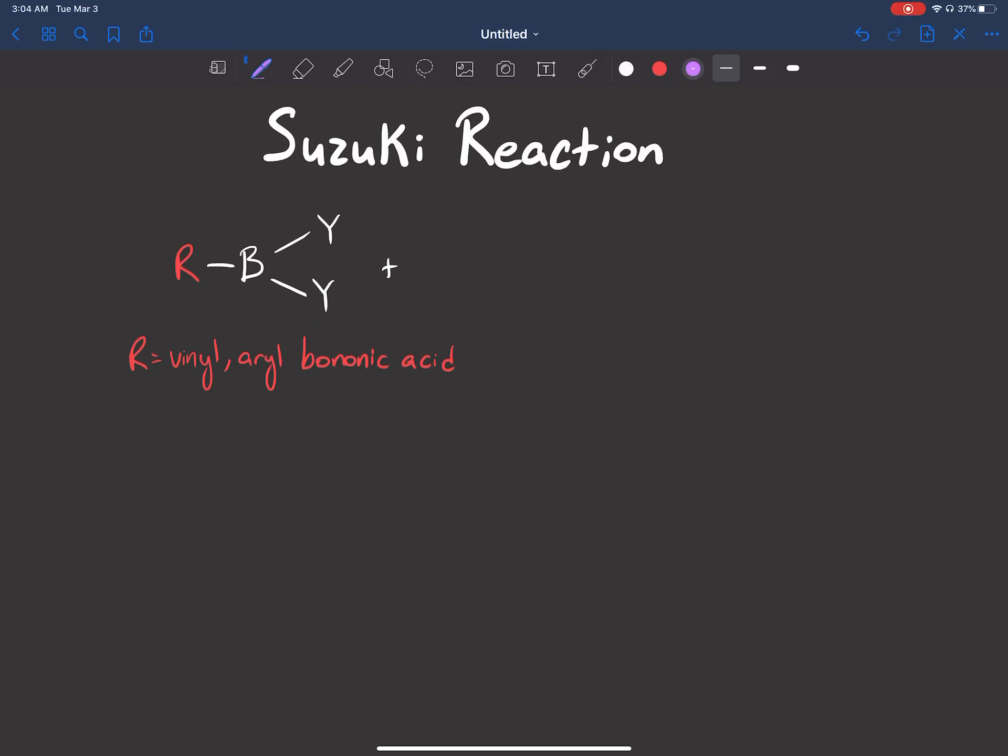And now, what do we react it with? We're going to react it with some sort of R group, and I'll explain what that is in a second, bound to a halogen.